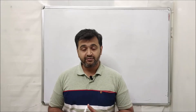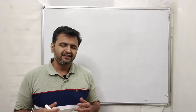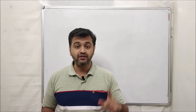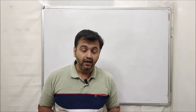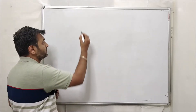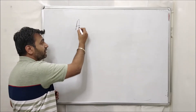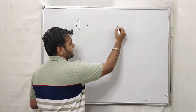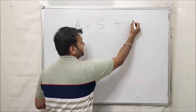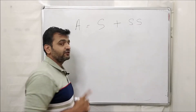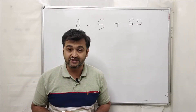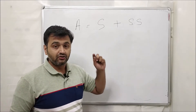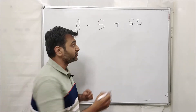Hello everyone. Today I'll be discussing one of the very simple, nice, and important decompositions of a square matrix. Given a matrix A, you can always write that matrix as a sum of a symmetric matrix and a skew-symmetric matrix. Moreover, this decomposition is a unique decomposition.